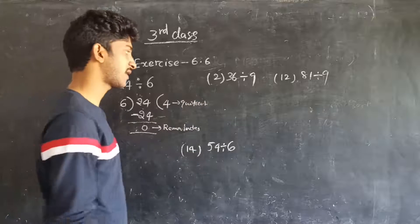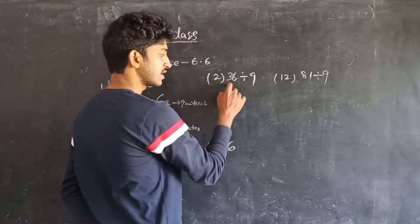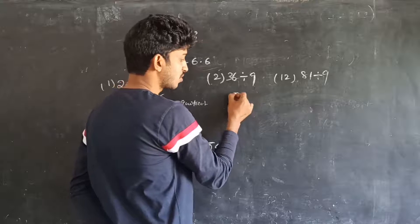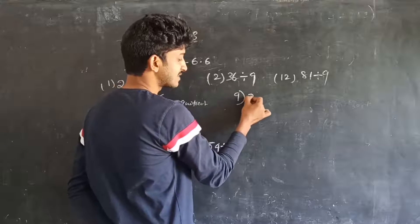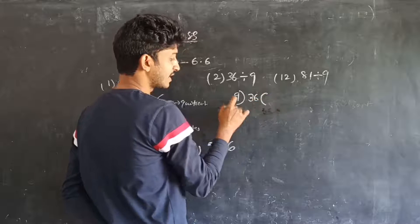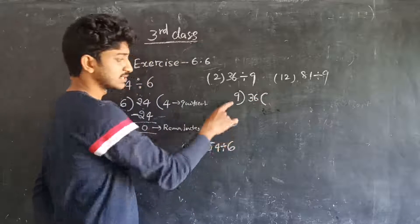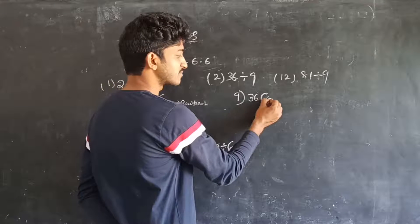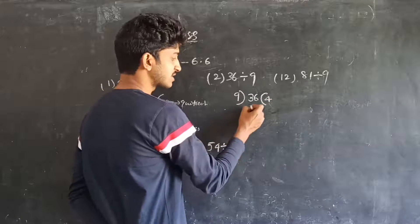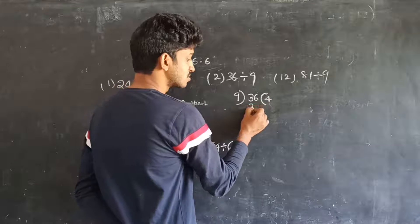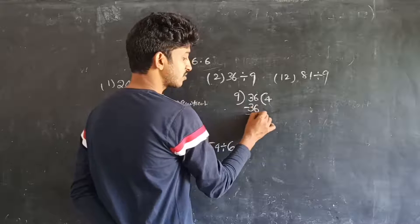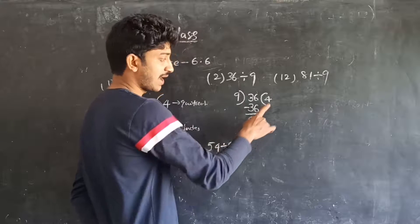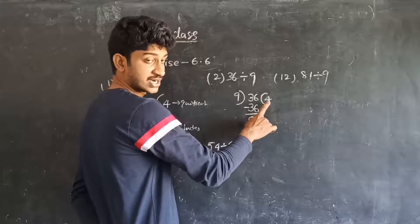Second problem: 36 divided by 9. Here 36 is the dividend and 9 is the divisor. In the 9 times table, 36 comes exactly 4 times — 9 into 4 is equal to 36. So 36 minus 36 is equal to 0. The remainder is also 0 and the quotient is 4.